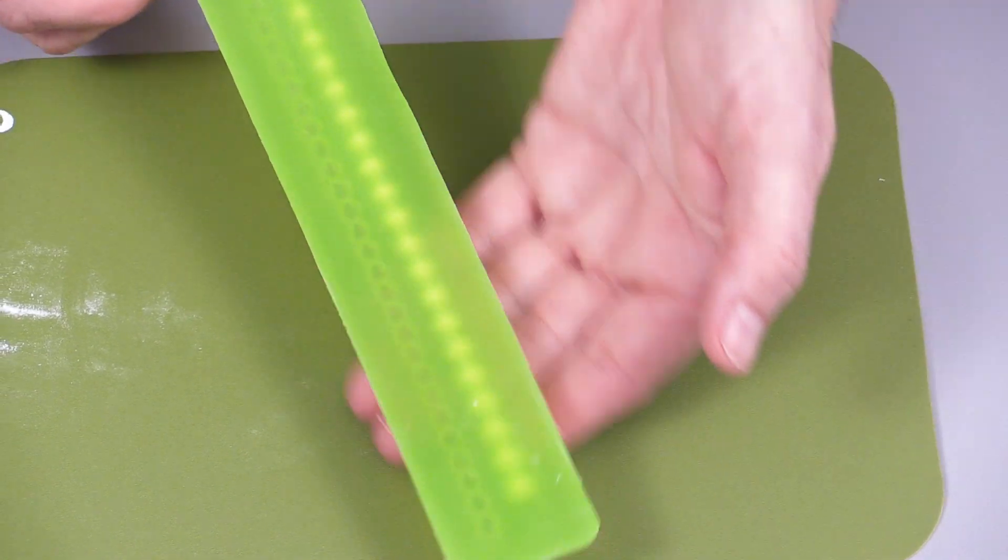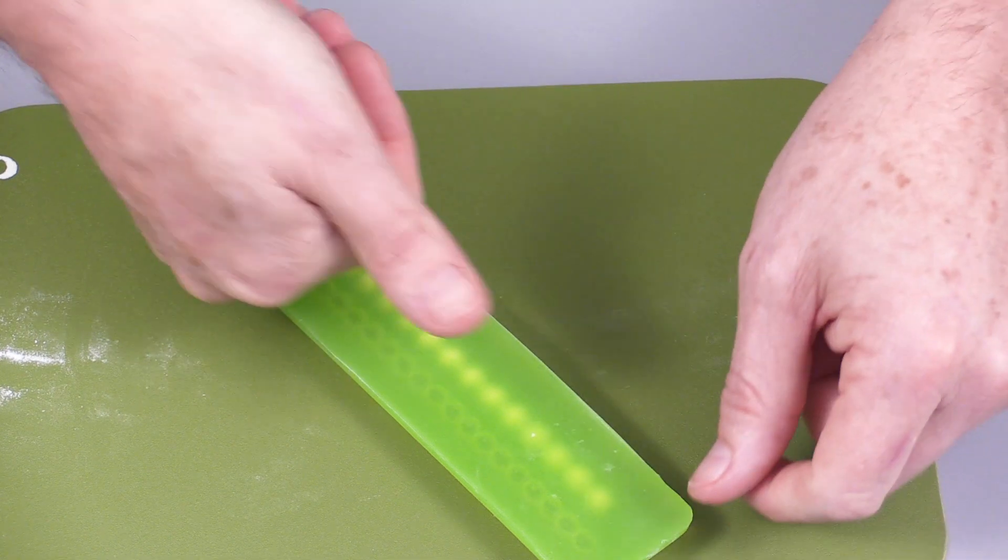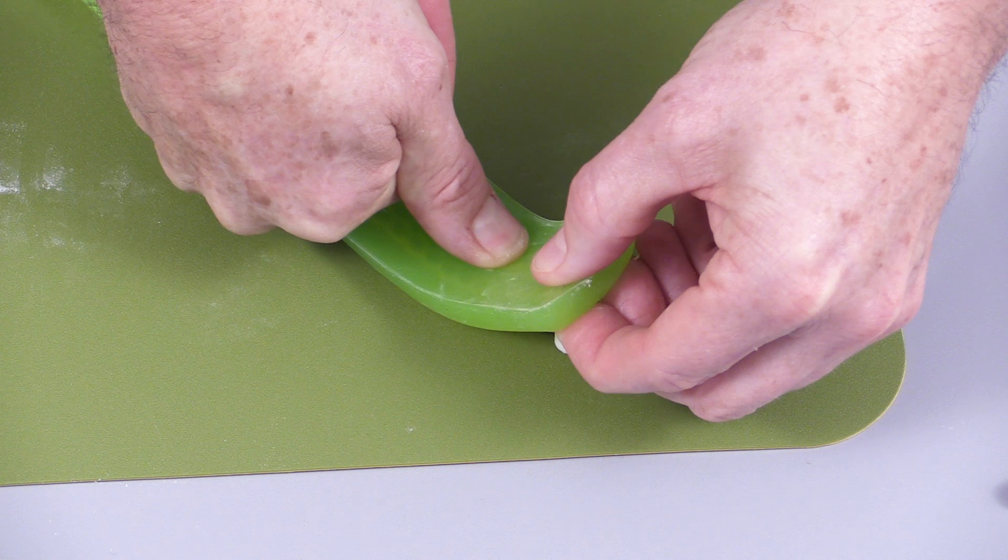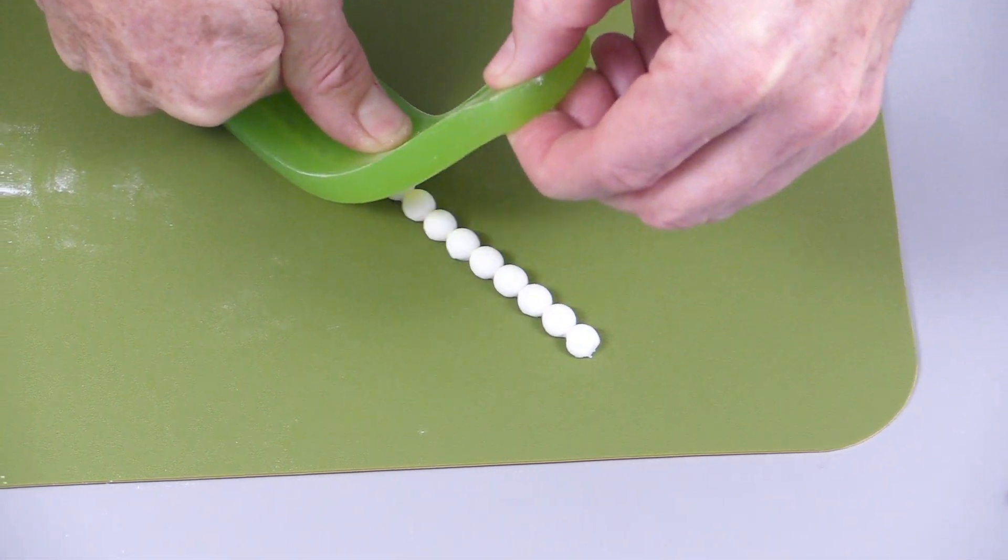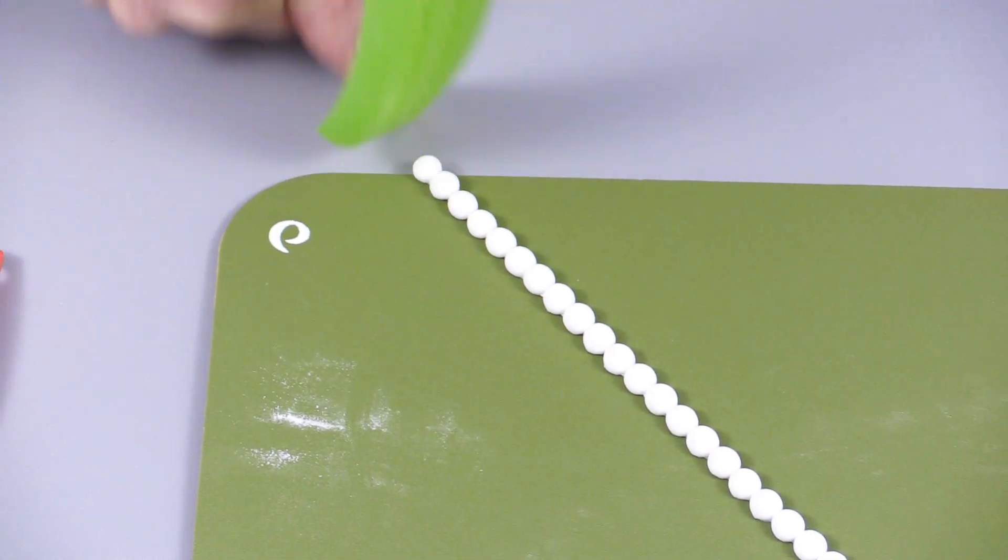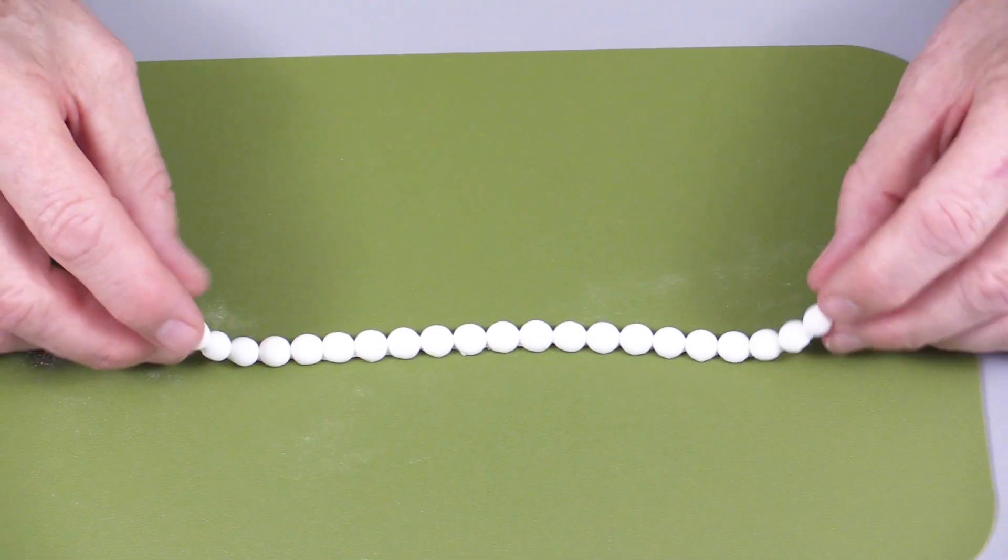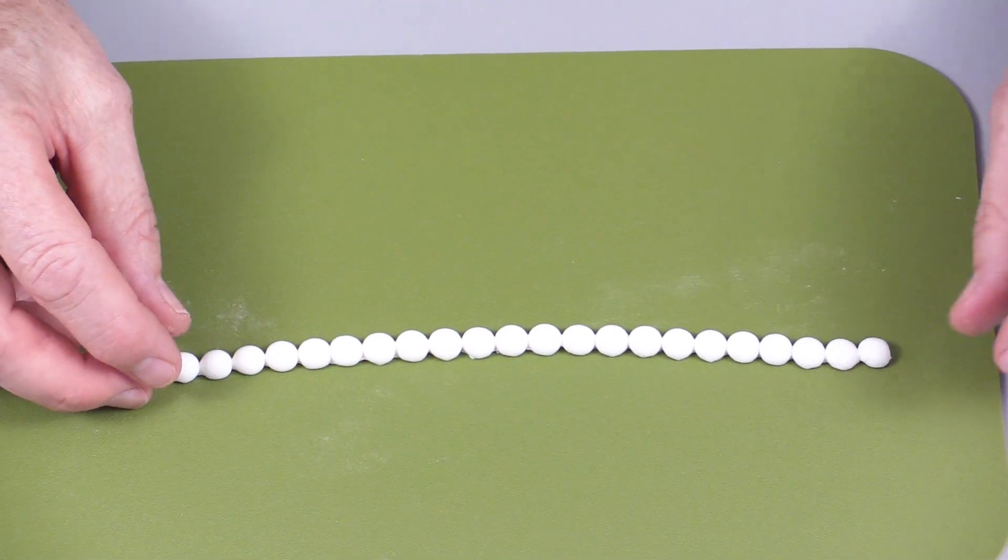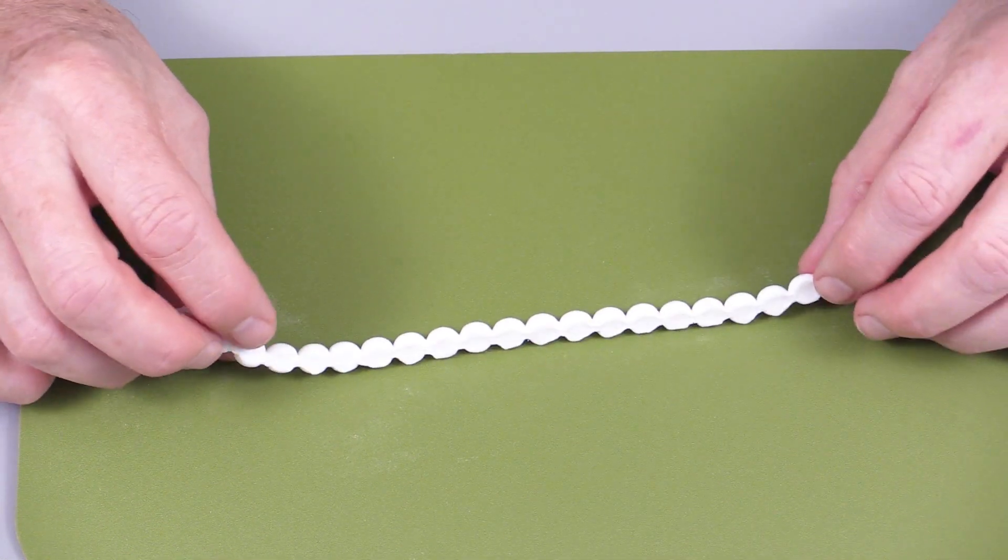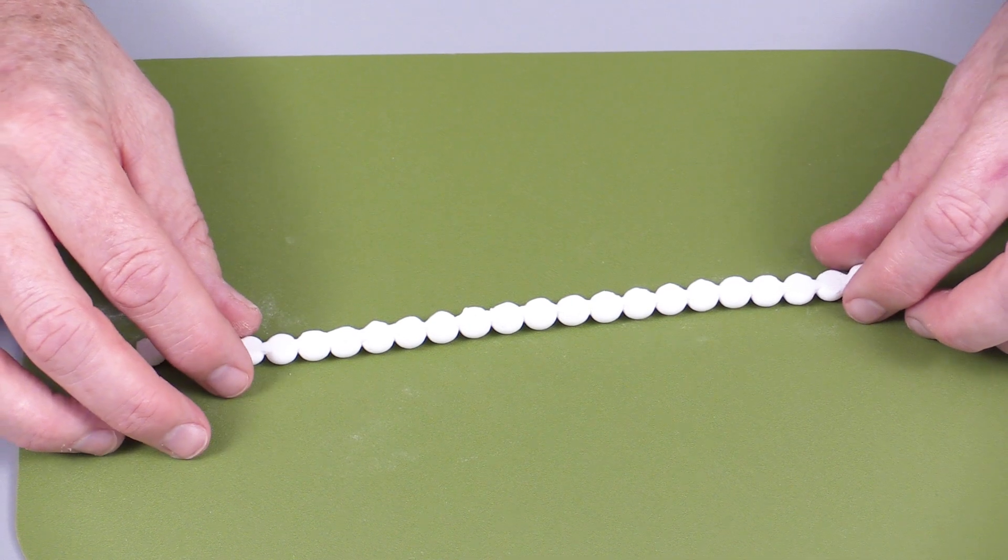Once we get to this point, we're going to release this so you can see the mold's interior. When we remove this from the mold, you hold your thumb on the top of the paste, peel the mold back while pressing. The pearls will just release beautifully onto your surface. Here we have your pearls. You would generally attach these to a cake with piping gel.